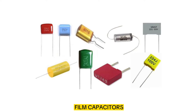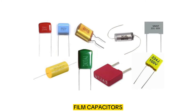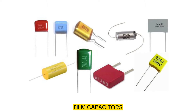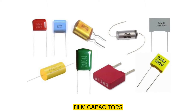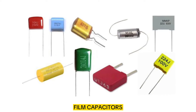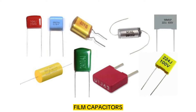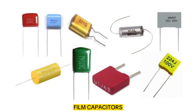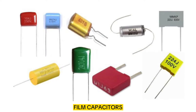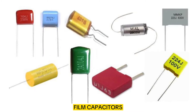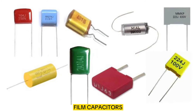Film capacitors are made of thin plastic or polymer film as the dielectric material. They are non-polarized and can be used in both AC and DC circuits, and are used for filtering, coupling, and timing applications.